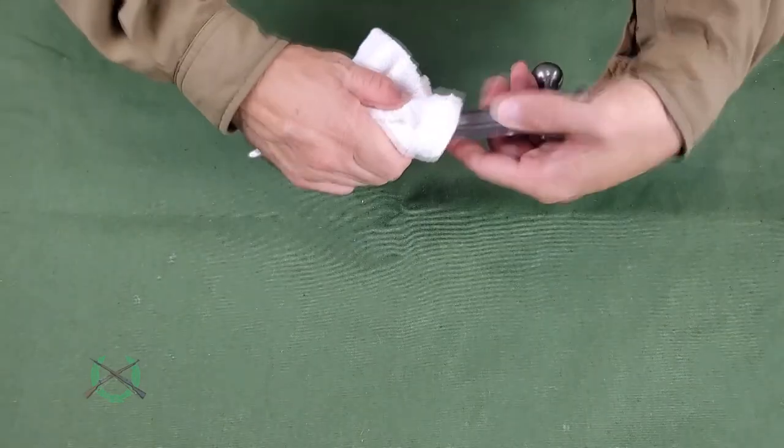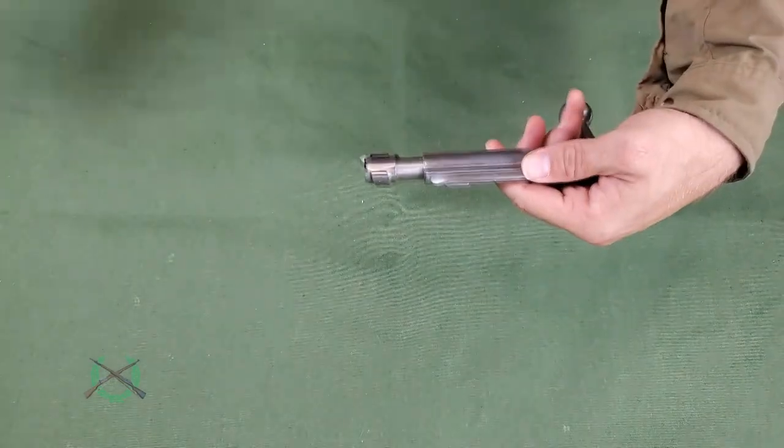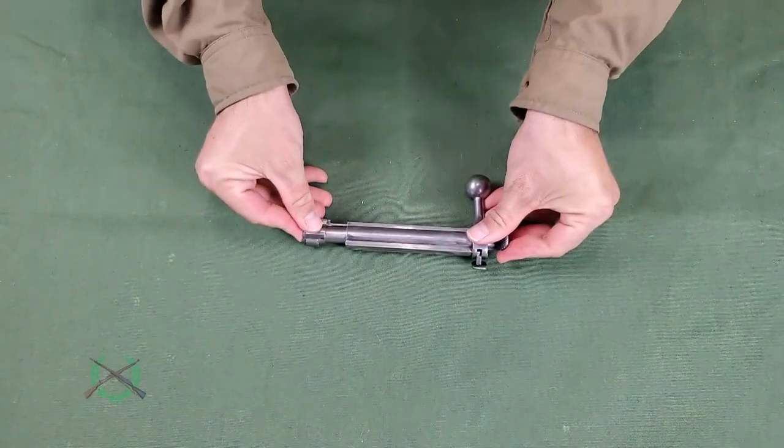To insert the bolt back into the rifle, it must be cocked. This is done by pulling the bolt head out of the bolt body until the locking lug is under the extractor.